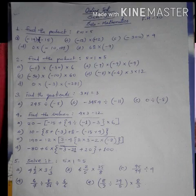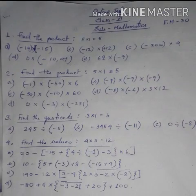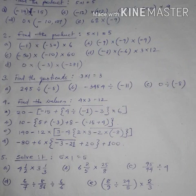Then: minus 80 plus 6 multiplied by, within second bracket, minus 3 minus 21 — these two under bar — then plus 20, second bracket close, then plus 100.